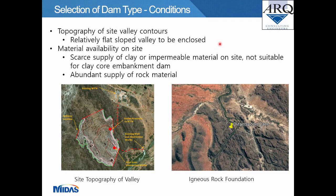Conditions to consider when selecting a dam type include topography and valley contours. The Oliphants Put site has a relatively flat slope valley enclosed by ring structure walls. Regarding material availability: there is a scarce supply of clay or impermeable material on site, making it unsuitable for clay core embankment dams. However, there is an abundant supply of rock material in the locality. Photographs show the flat valley topography and the dam's relation to other components of the abstraction works.